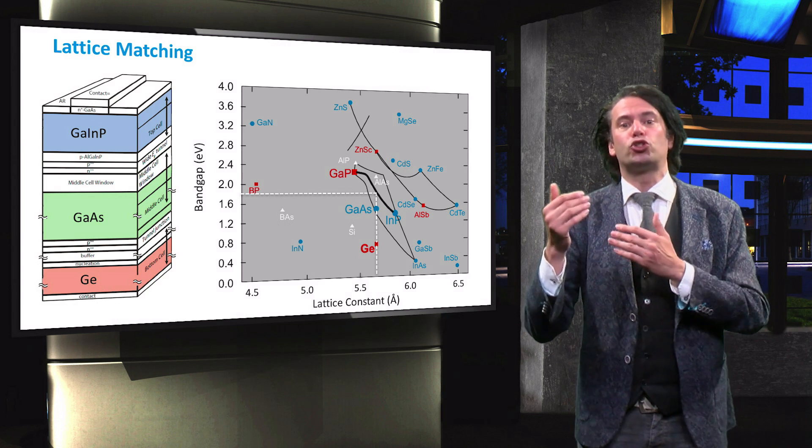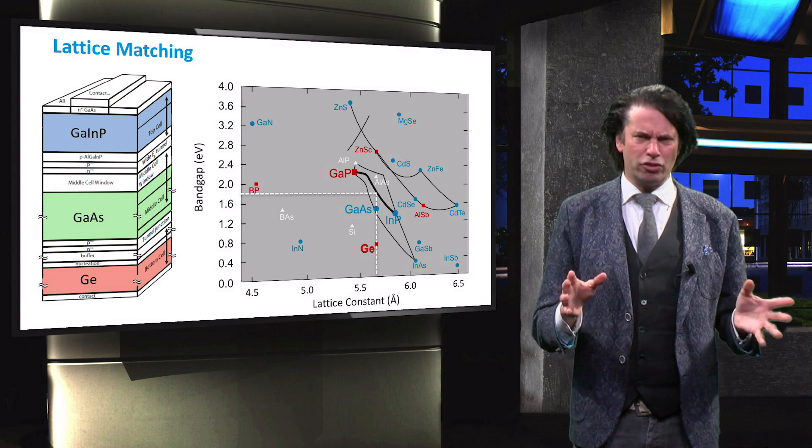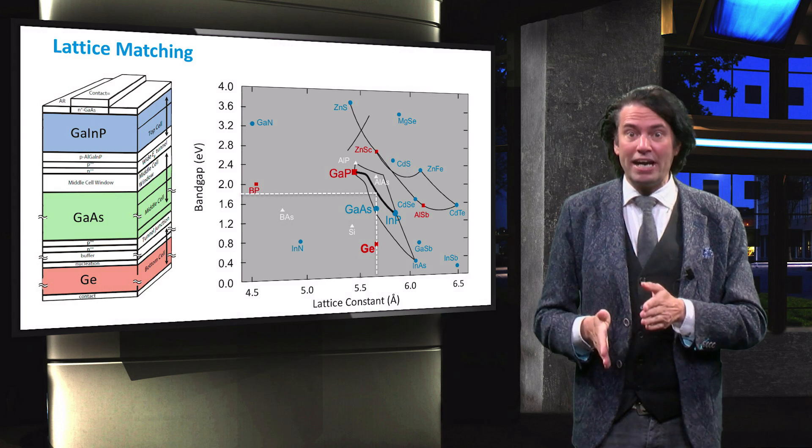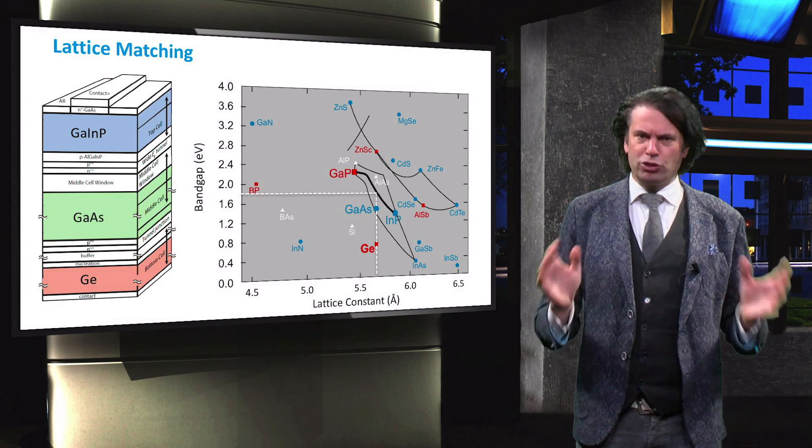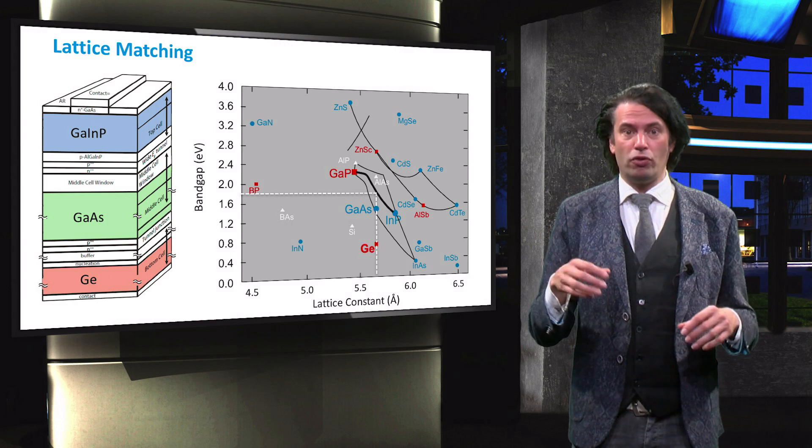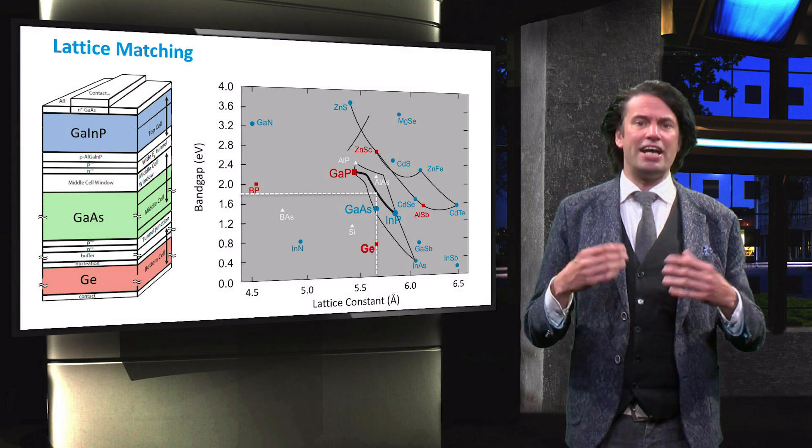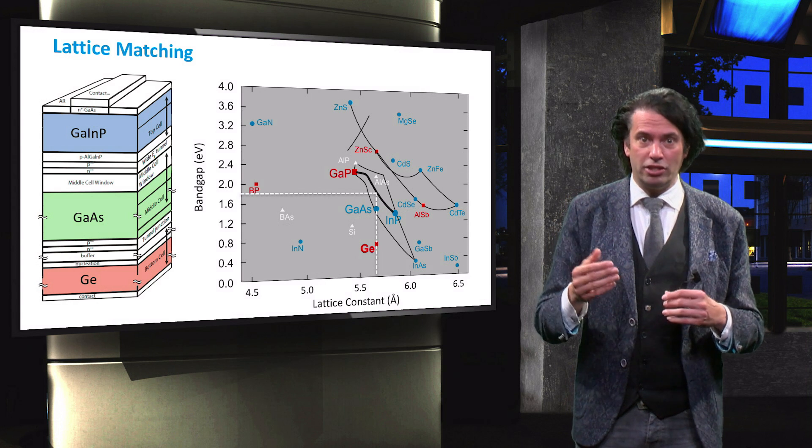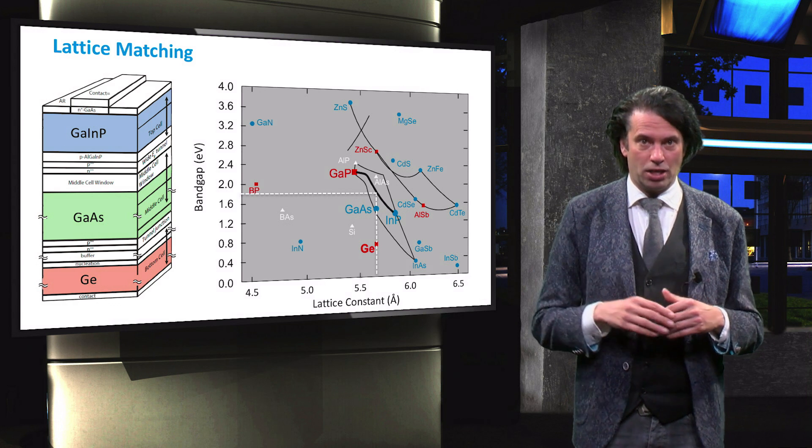You can imagine, however, that integrating more sub-cells makes it harder for a device to remain lattice matched. We saw earlier in this video that the spectral utilization of this typical 3-5 device can increase by introducing additional cells in between the germanium and gallium arsenide.